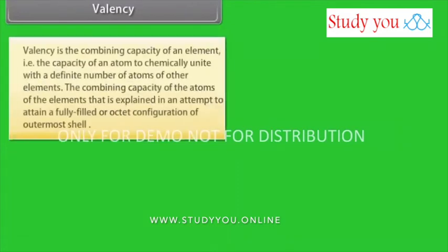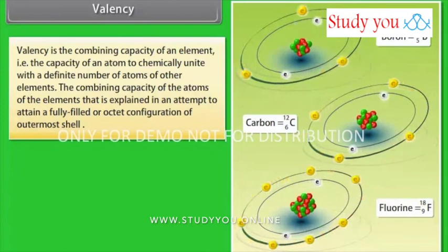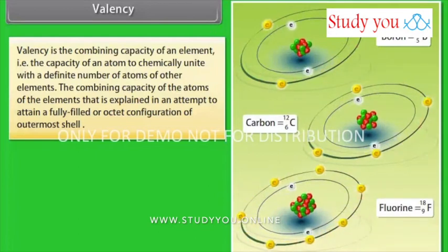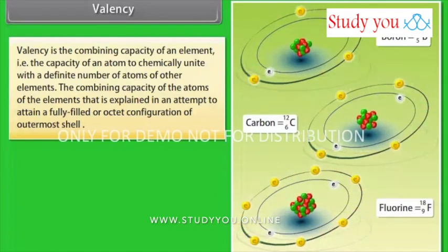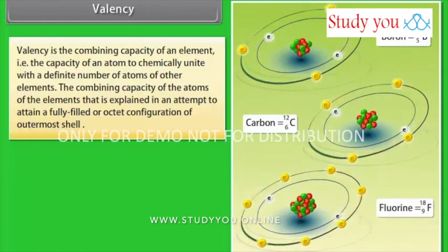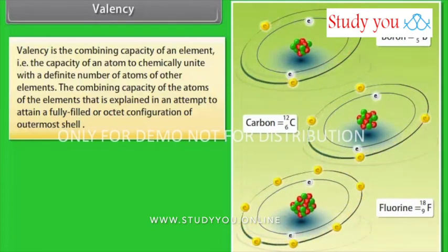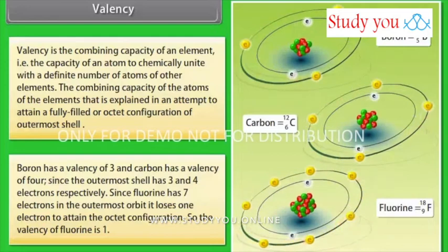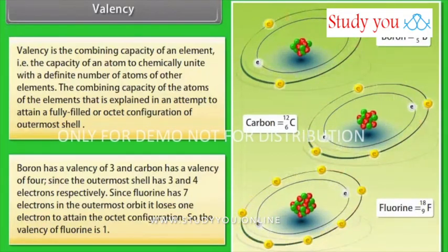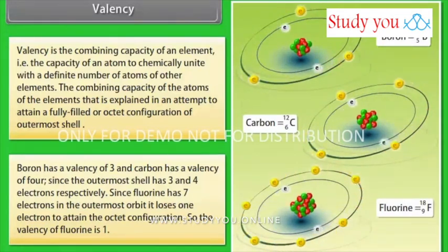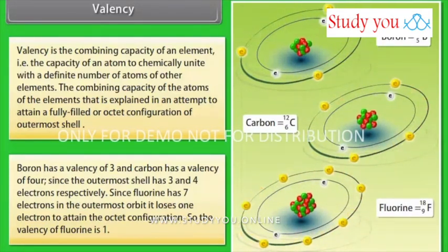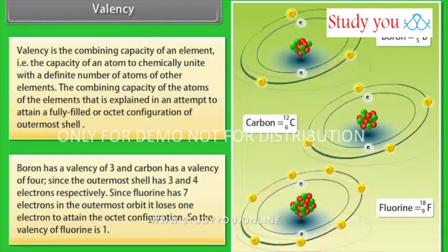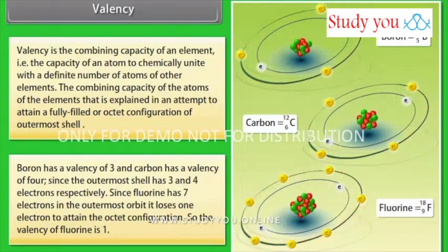Valency. Valency is the combining capacity of an element, i.e., the capacity of an atom to chemically unite with the definite number of atoms of other elements. The combining capacity of the atoms of the elements is explained in an attempt to attain a fully filled or octet configuration of outermost shell. Boron has a valency of 3, and carbon has a valency of 4, since the outermost shell has 3 and 4 electrons respectively. Since fluorine has 7 electrons in the outermost orbit, it loses 1 electron to attain the octet configuration. So, the valency of fluorine is 1.